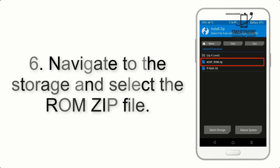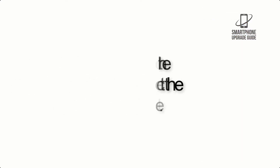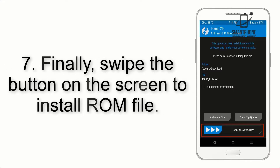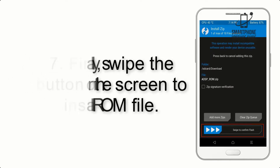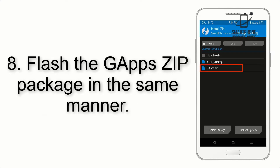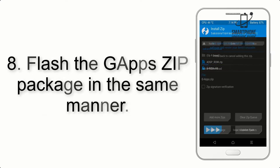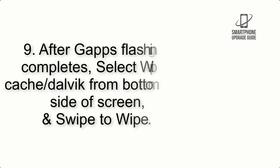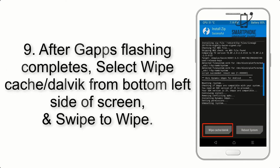Step 5: Go back to the recovery main screen and tap on the Install button. Step 6: Navigate to the storage and select the ROM zip file. Step 7: Swipe the button on the screen to install the ROM file. Step 8: Flash the GApps zip package in the same manner.